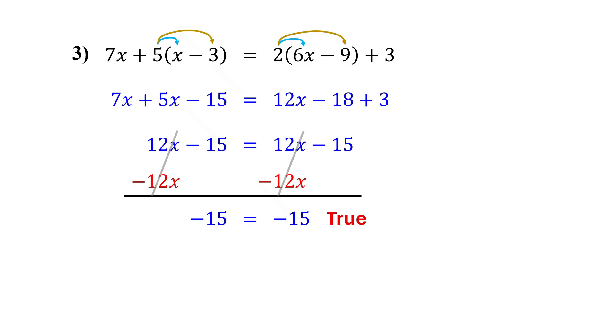That's a true statement. This means if you plug in any number for x, both sides will always be equal. The equation is true for every value of x. So its solution is all real numbers, and that means the equation is an identity. Whenever solving a linear equation leaves you with a true statement like this, that's called an identity equation.